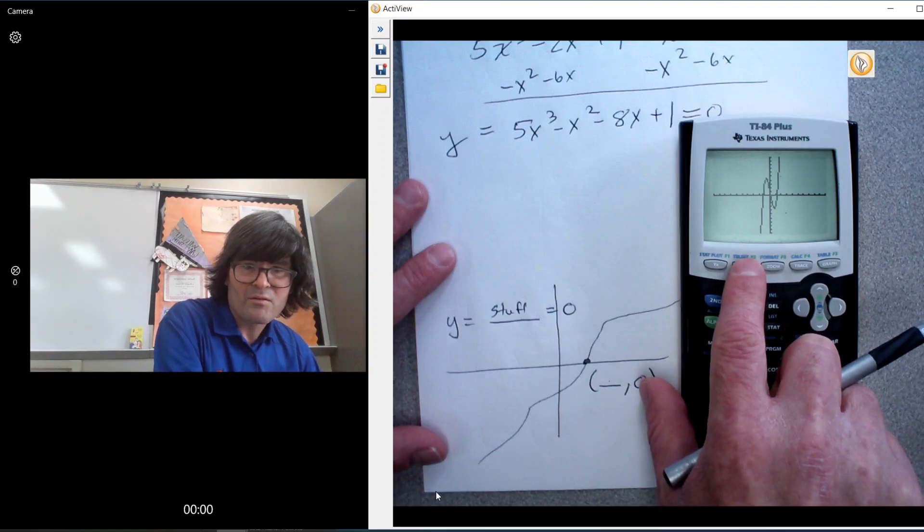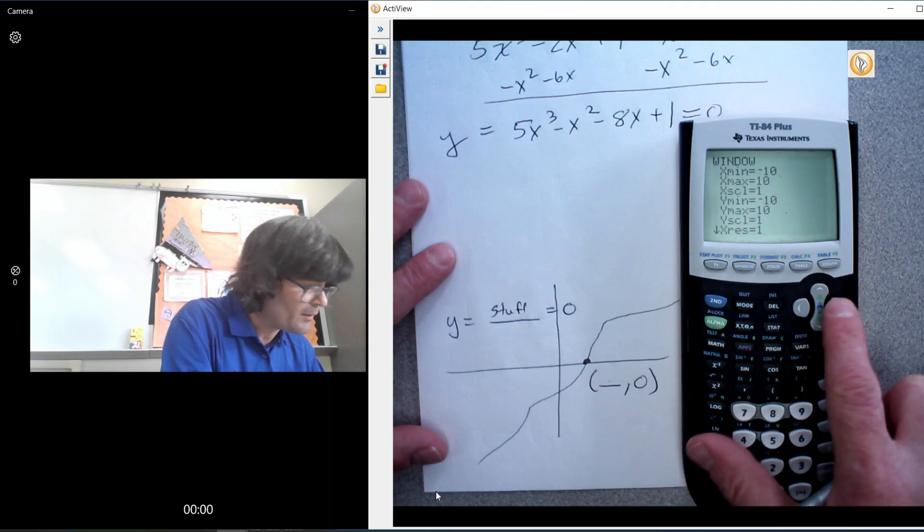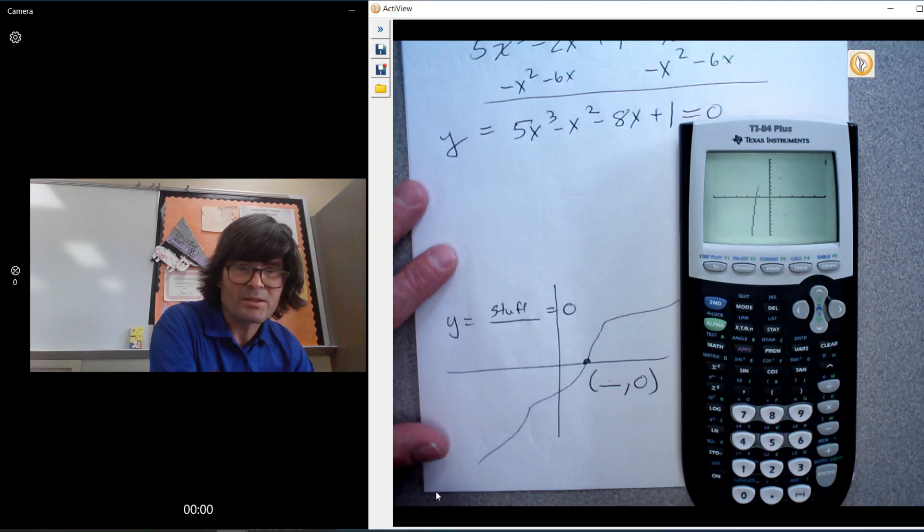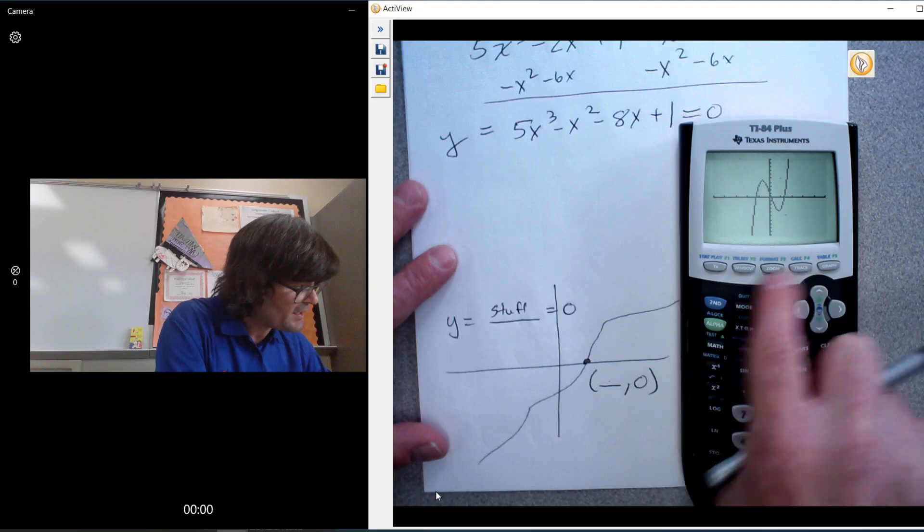If you push window, you can make your x go from like negative 5 to 5. However you feel like looking at this, it's up to you. So let's find these three zeros.